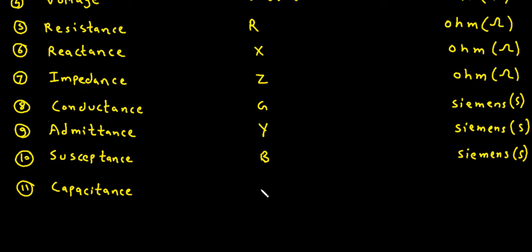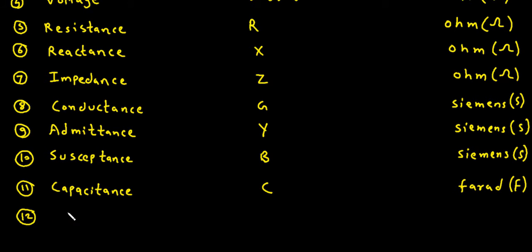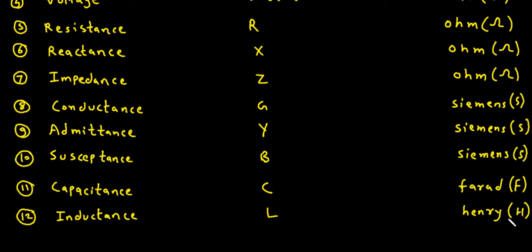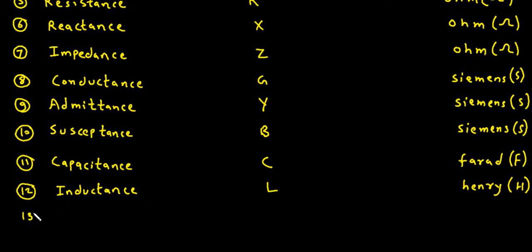Quantity: Capacitance. Symbol: capital C. Basic Unit is Farad, denoted by capital F. Quantity: Inductance. Symbol: capital L. Basic Unit is Henry, denoted by capital H.